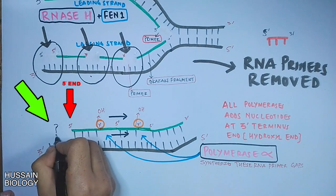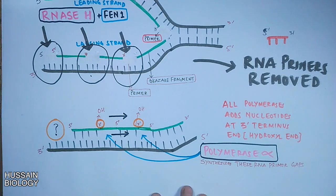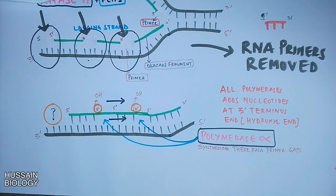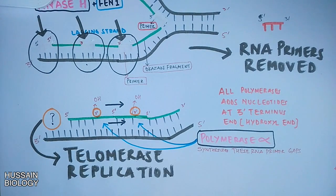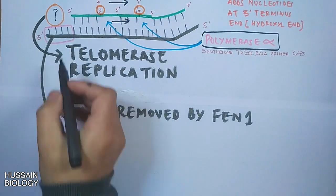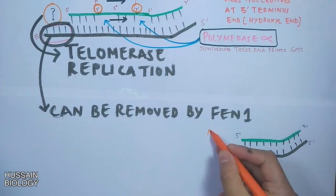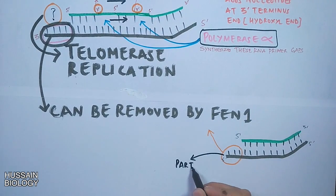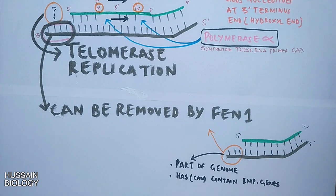Now we have a problem at the end of the lagging strand, where we have a 5' terminus end and polymerase needs a 3' terminus end to synthesize that part. So this last primer removal on the lagging strand always ends up with this problem, which is fixed by telomerase replication. Remember, most cells remove the parent strand overhang by FAN1 enzyme, creating a DNA molecule, but this way we lose some information as this is part of the genome. Due to this, at every cycle the DNA molecule shortens, and we end up losing important information.